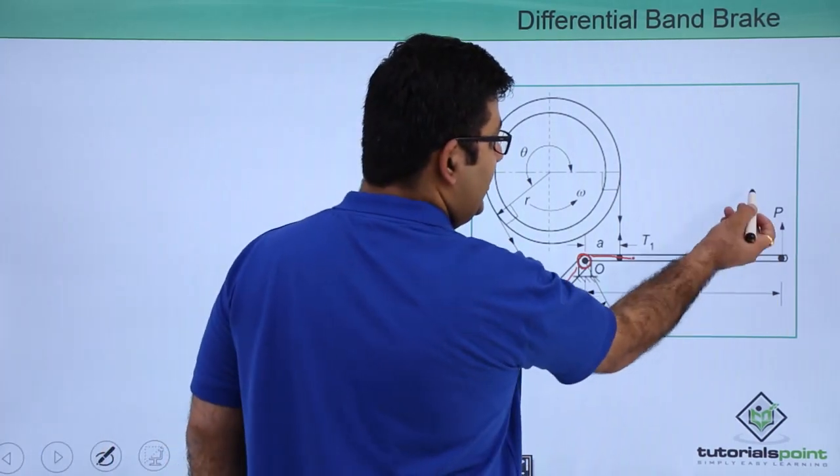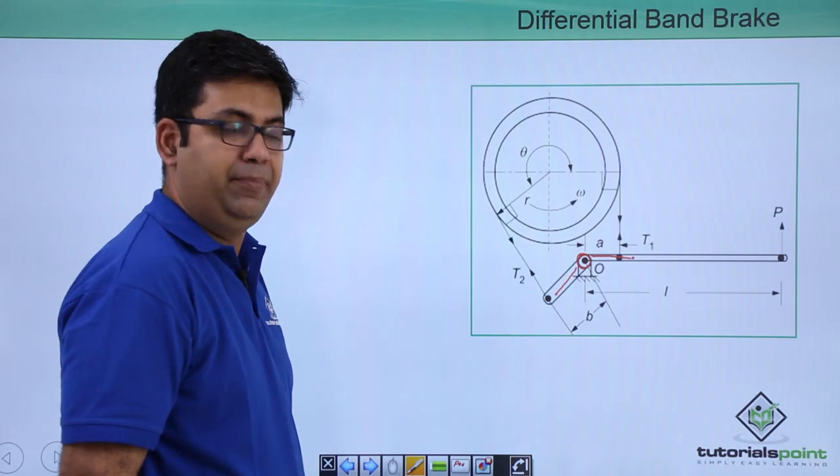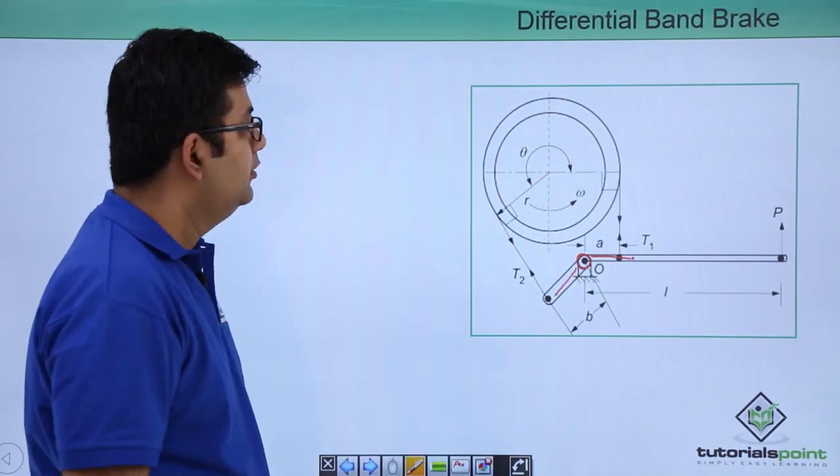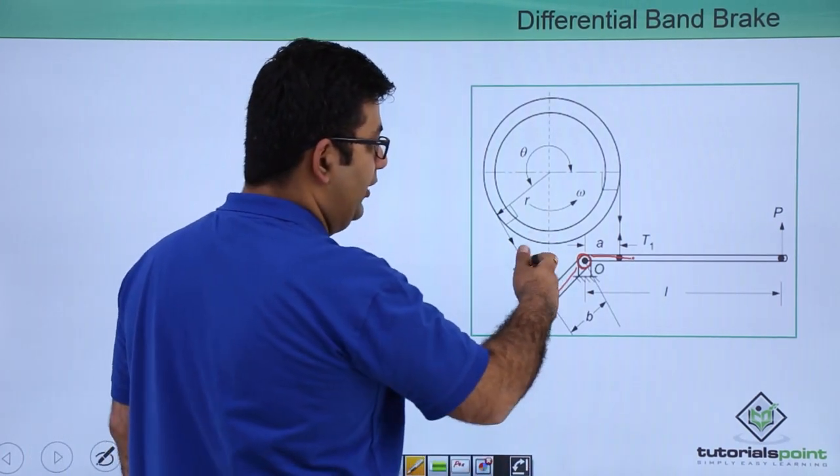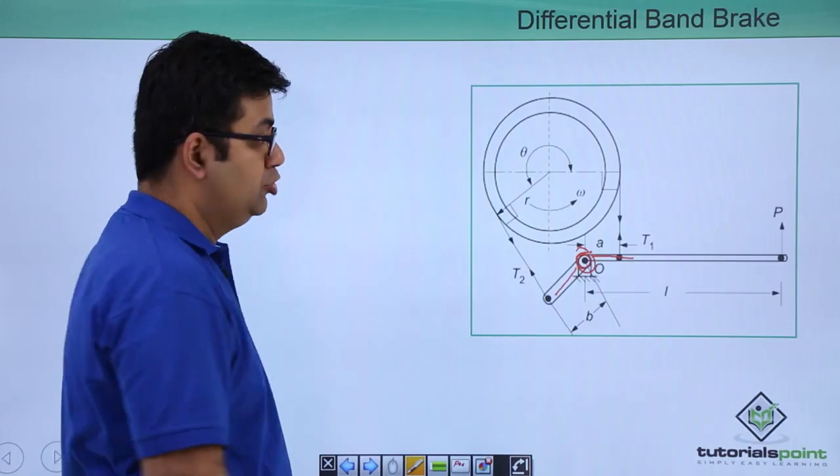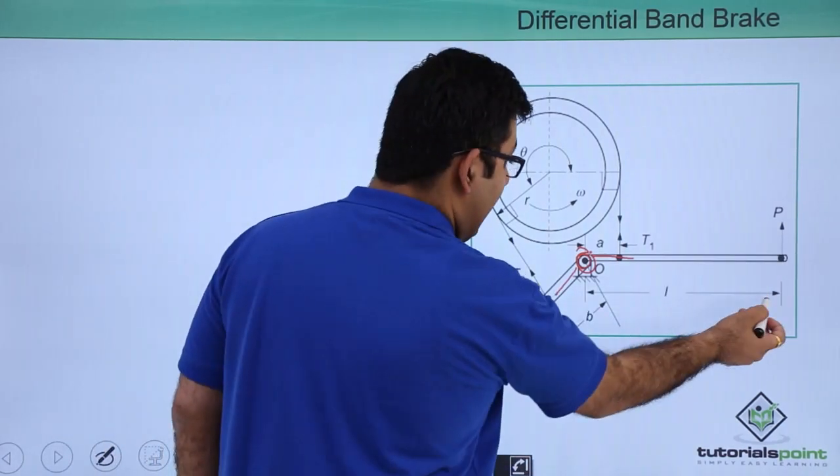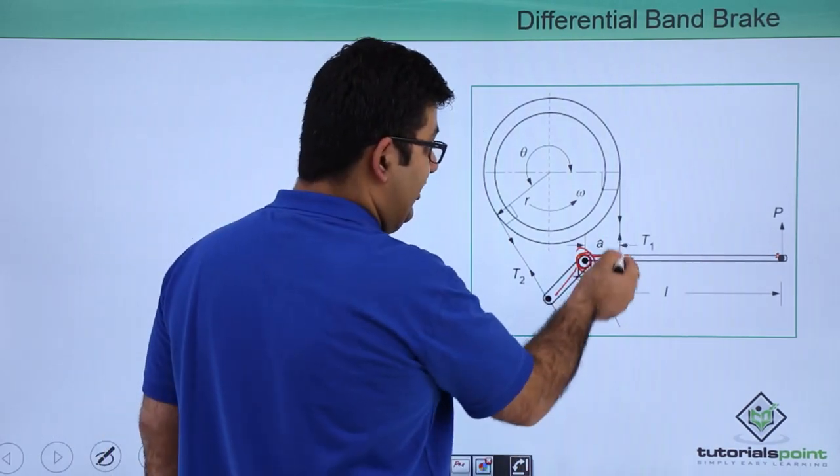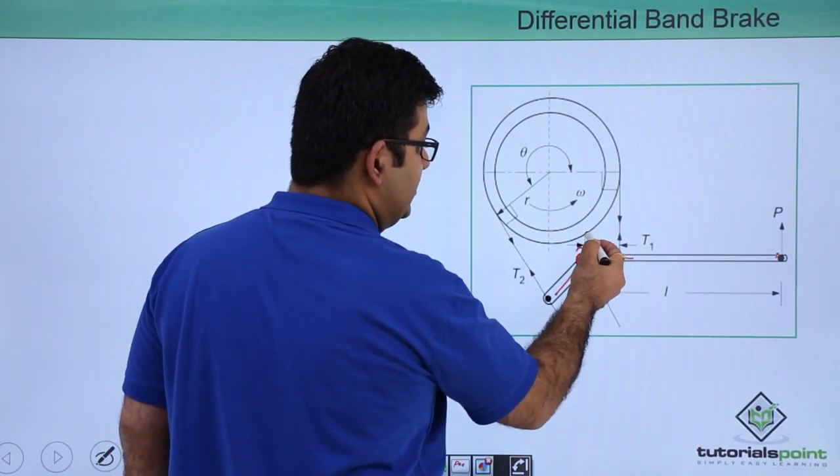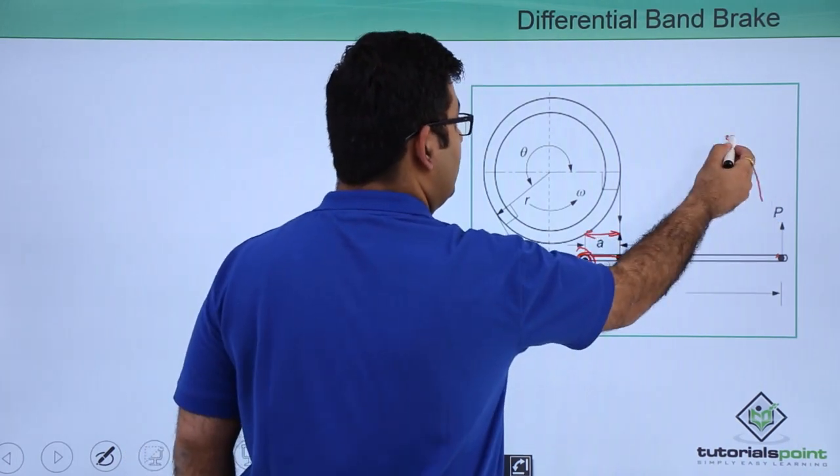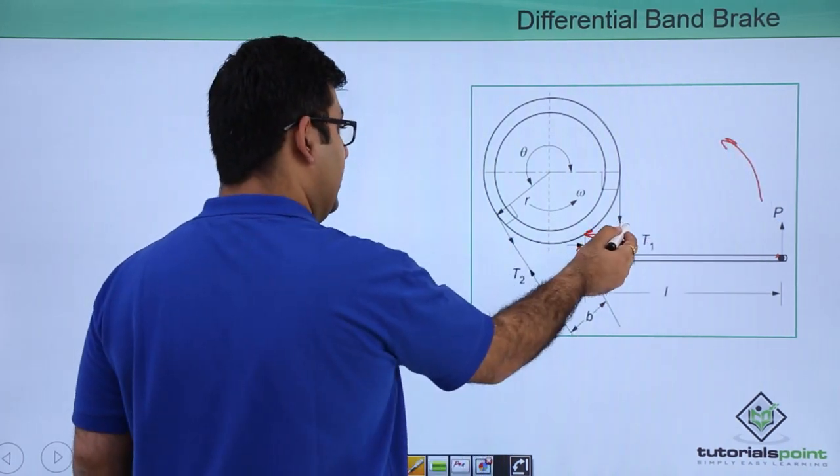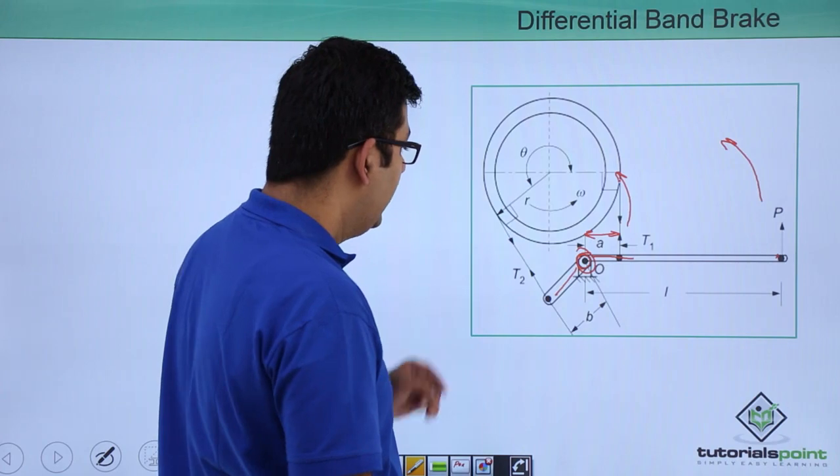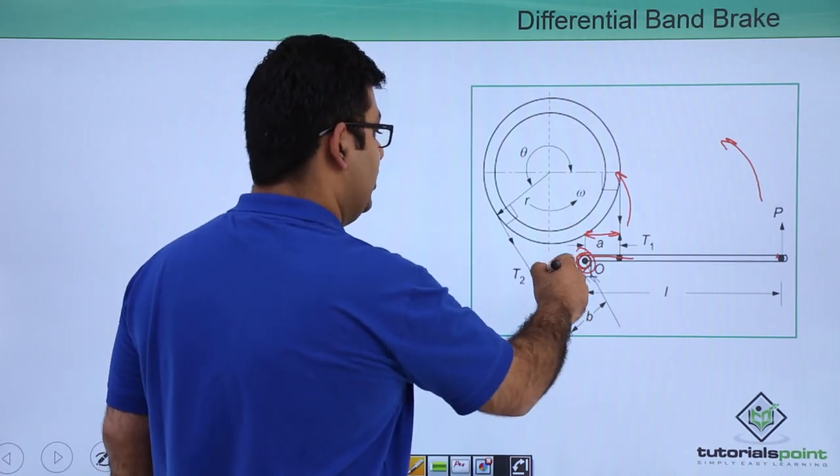You have this force P being applied and the drum is moving in the counter-clockwise direction. If you take the moments about this fulcrum O, P into L—that is the distance between this point and the fulcrum—plus T1 into A. This distance is A. So P into L goes in that direction, T1 into A goes in that direction, and T2 into B goes in the opposite direction.